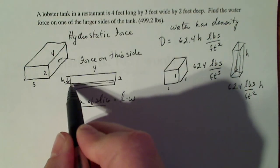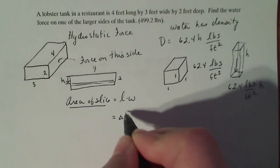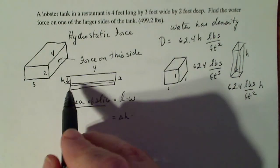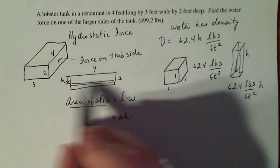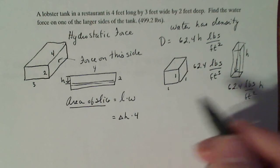So area of my slice at depth H feet is just simply going to be length times width. Now, if this is H deep, that means that the thickness of my slice is going to be delta H. So my width is delta H. And my length is always going to be, no matter where I slice this thing, my length is always going to be four, four feet.